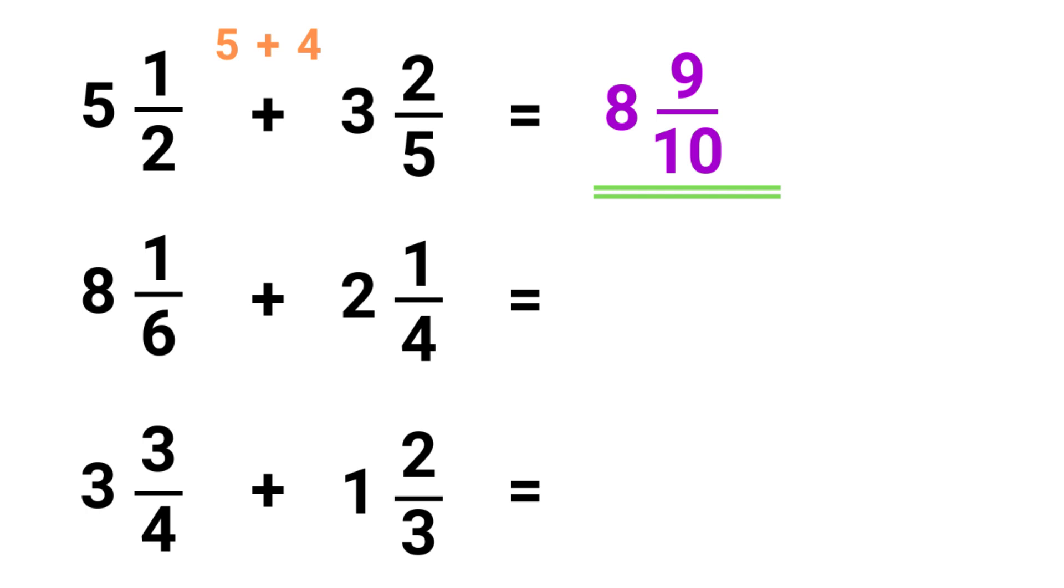Now let's look at the next one, 8 1/6 plus 2 1/4. First we get the denominator, 6 times 4 is 24. Then we cross multiply. 1 times 4 equals 4, and 6 times 1 equals 6. We add this together, so 4 plus 6 equals 10.